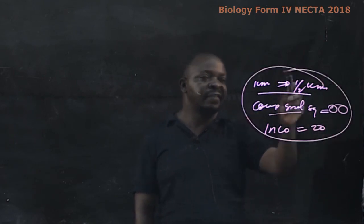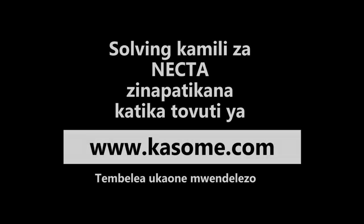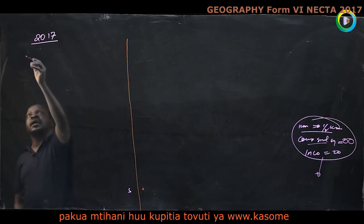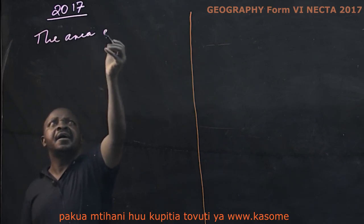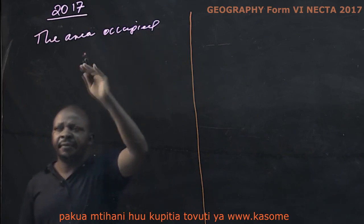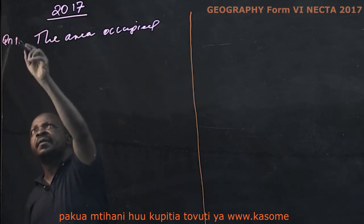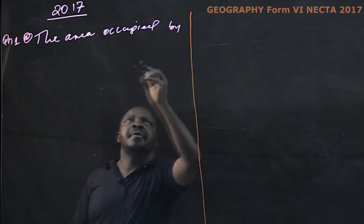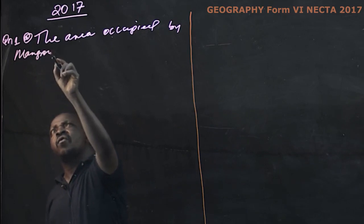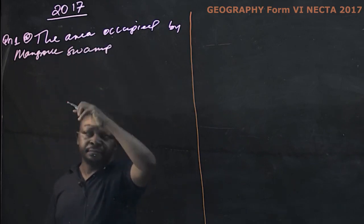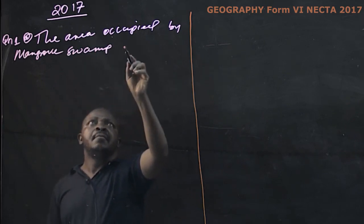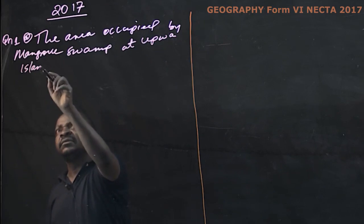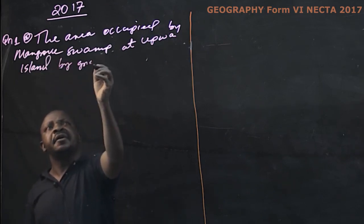With this data analysis, the answer for the question is derived as follows. This is question one A: the area occupied by mangrove swamp at Upwa Iceland, calculated by the greedy method.